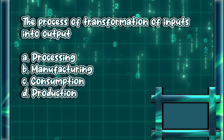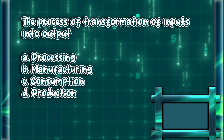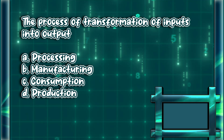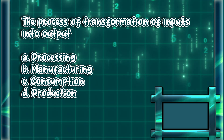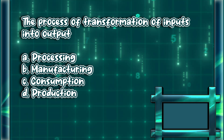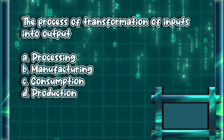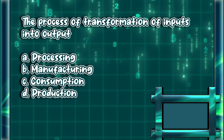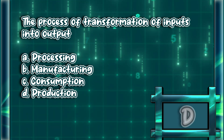The process of transformation of inputs into output. A. Processing. B. Manufacturing. C. Consumption. D. Production. The answer is letter D.